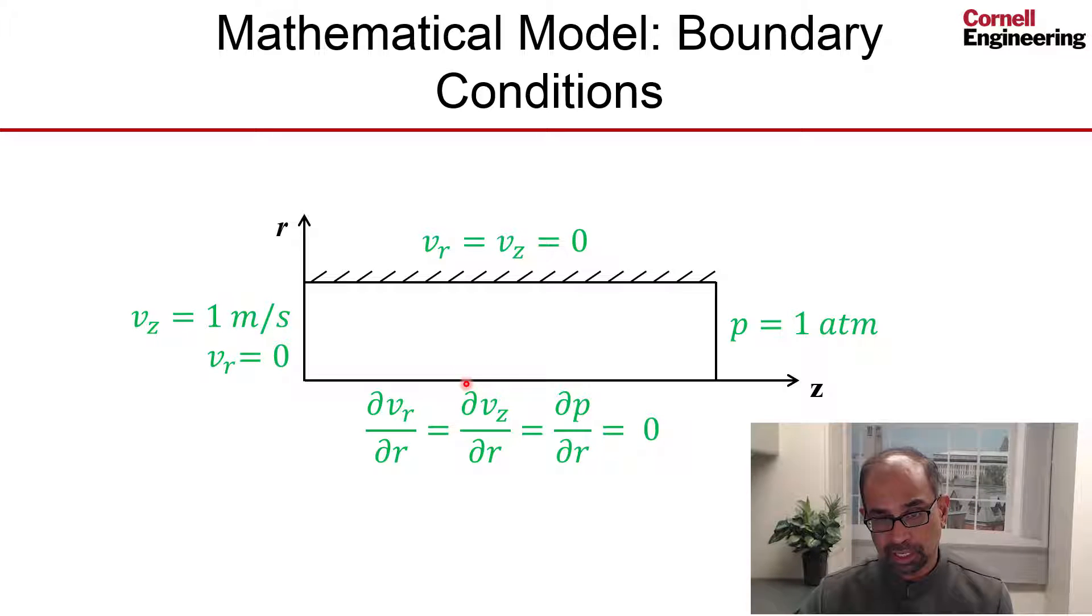And also, the velocity at the axis of symmetry has to be in the axial direction. So we set the radial component of the velocity to be zero.